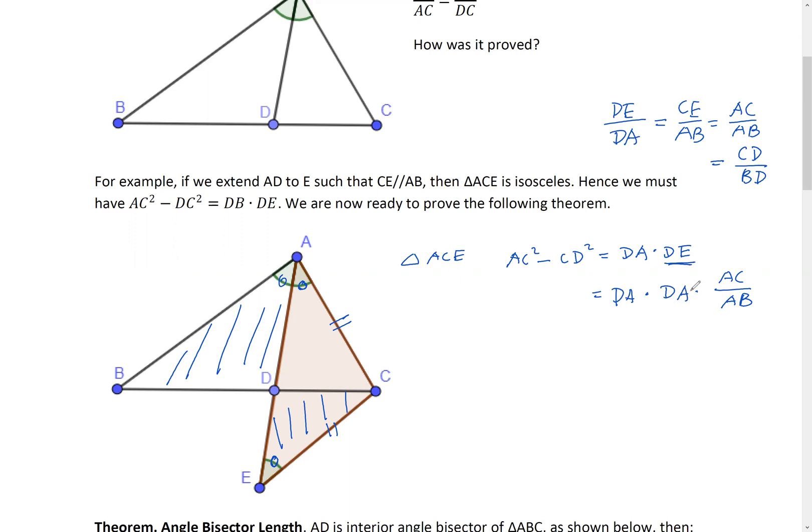So right now, I replace DE by DA times AC over AB. So now the right-hand side becomes DA squared times AC over AB.